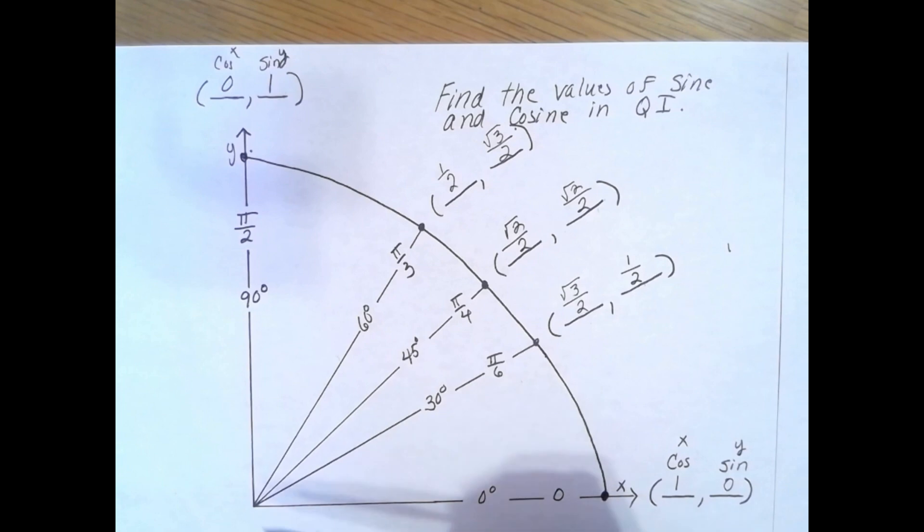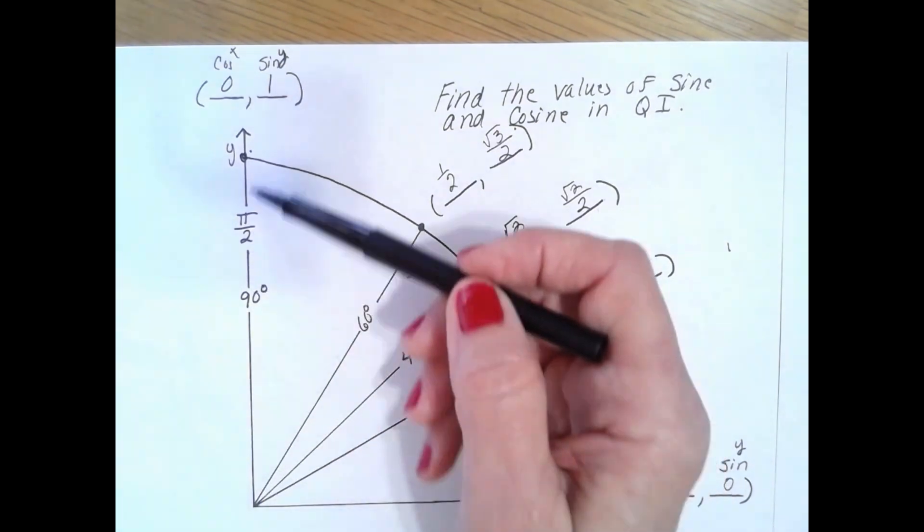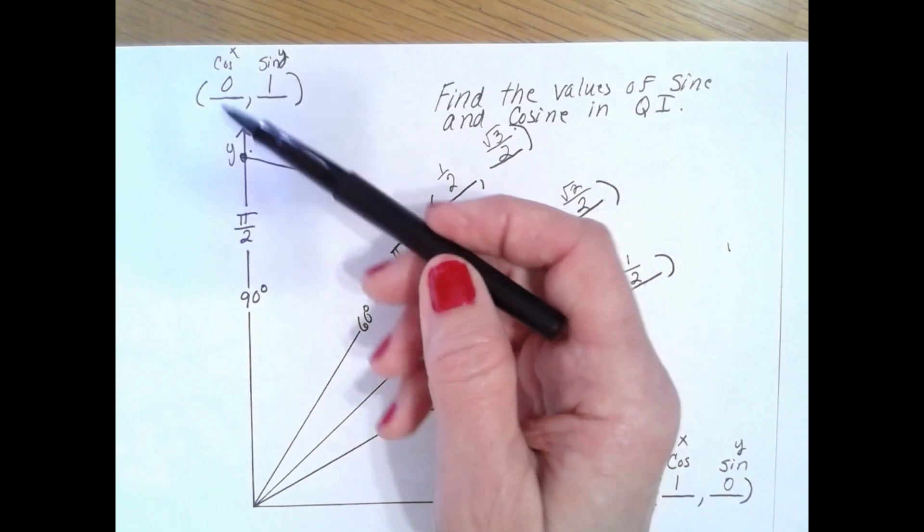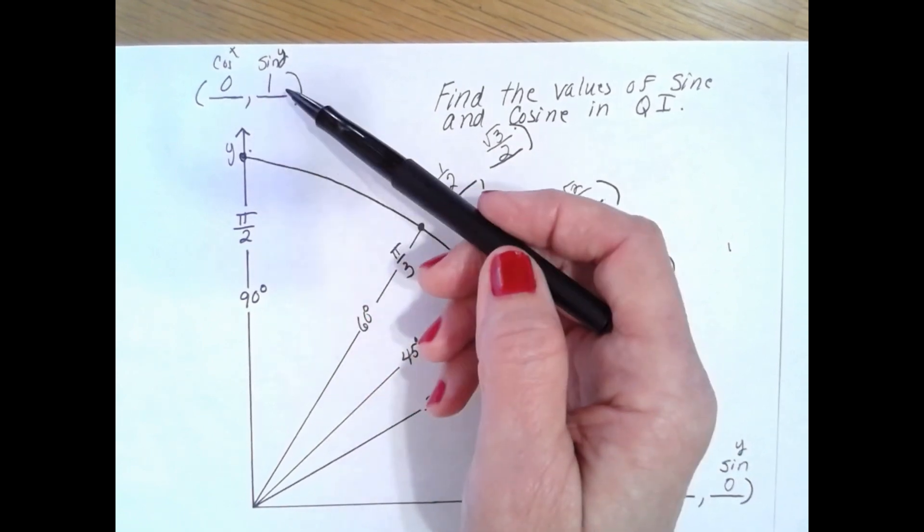Now let's look at 90 degrees. I start at my origin of zero so I stay at zero, but I do go up on my y-axis one unit. Therefore at π over 2 radians, cosine is zero and sine is 1.